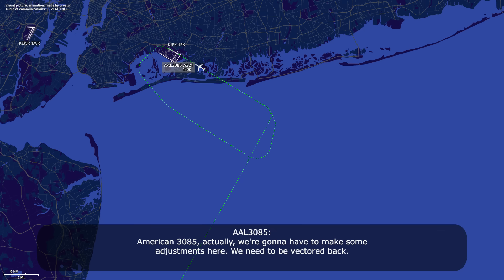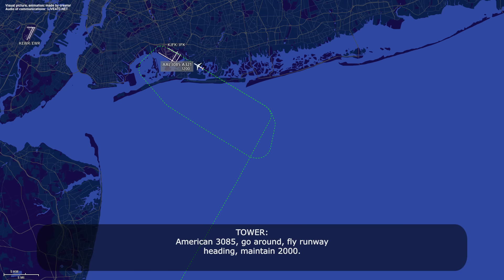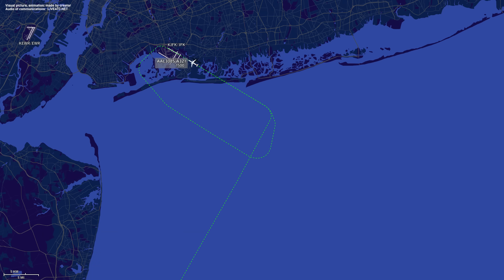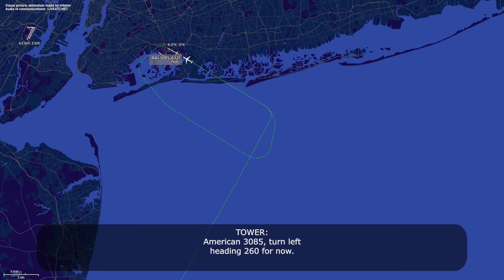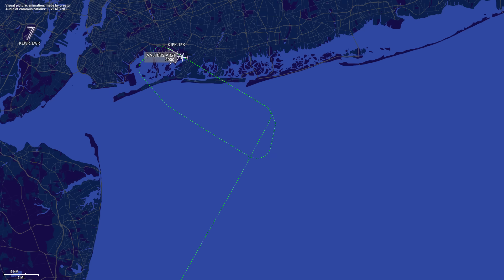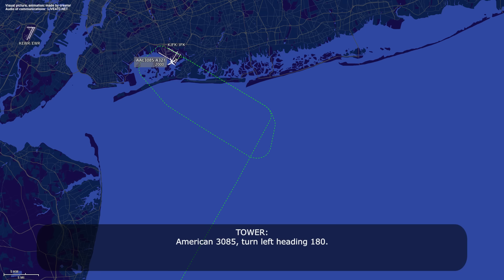American 385, go around, fly runway heading, maintain 2,000. Go around, runway heading, 2,000, American 385. American 385, turn left heading 260 for now. 260, American 385. American 385, turn left heading 180. Left 180, American 385. American 385, disregard — fly heading 260 again. Back to 260, American 385.